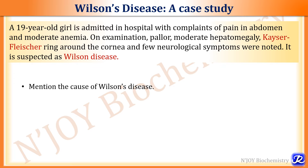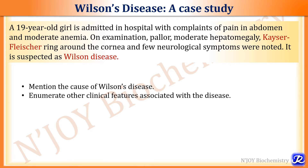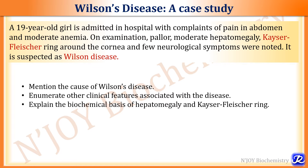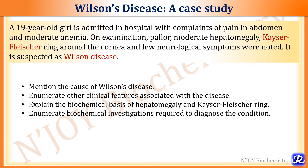The most likely questions that can be asked are: mention the cause of Wilson's disease; enumerate other clinical features associated with the disease; explain the biochemical basis of hepatomegaly and Kayser-Fleischer ring; enumerate biochemical investigations required to diagnose the condition; and how can this patient be managed?